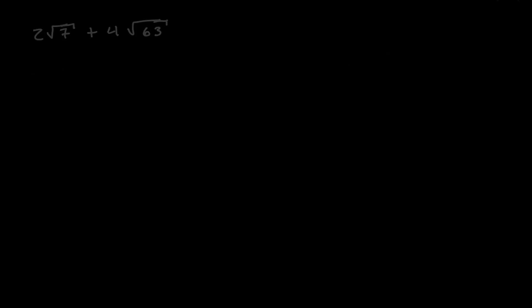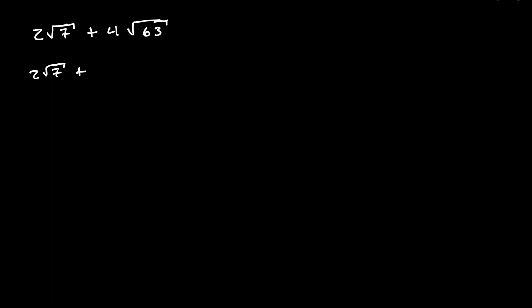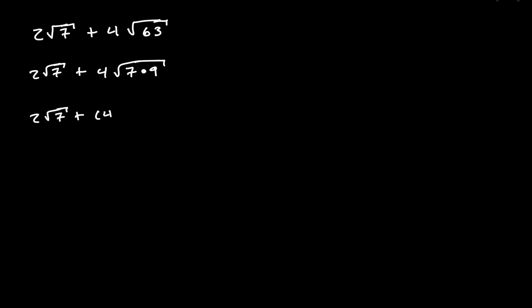Let's take a look at the last example. Notice that the values inside the square root do not match, so we cannot combine them yet. Let's see if we can simplify those square roots. On the first expression, the value of 7 — we cannot simplify that any further. On the second term, the value of 63, we can write this down as 7 times 9. In the second term, we can apply the rule of roots — if we're multiplying inside the square root, we can separate it by multiplying each root individually. So we can write this as 4 times the square root of 7, times the square root of 9.